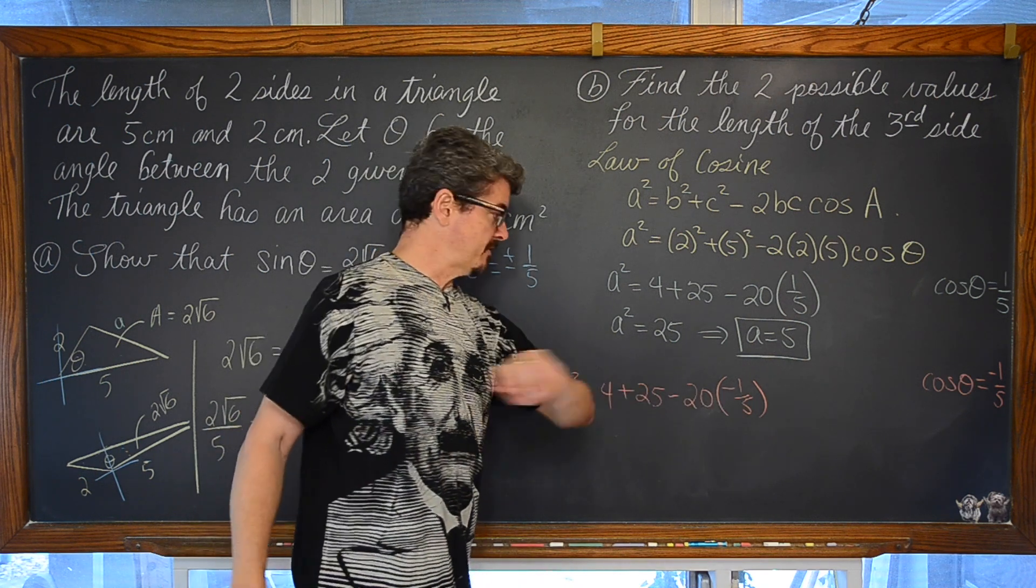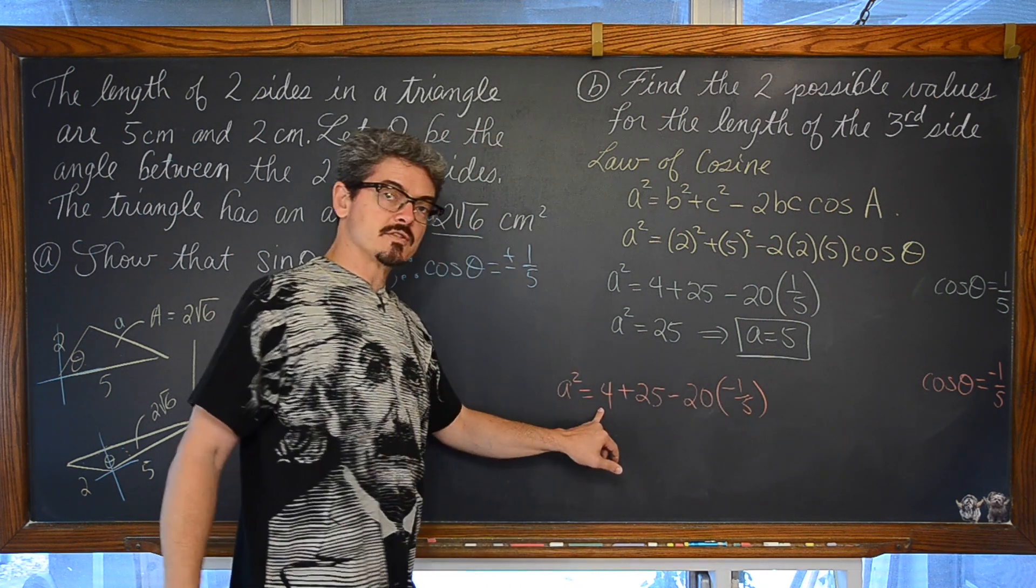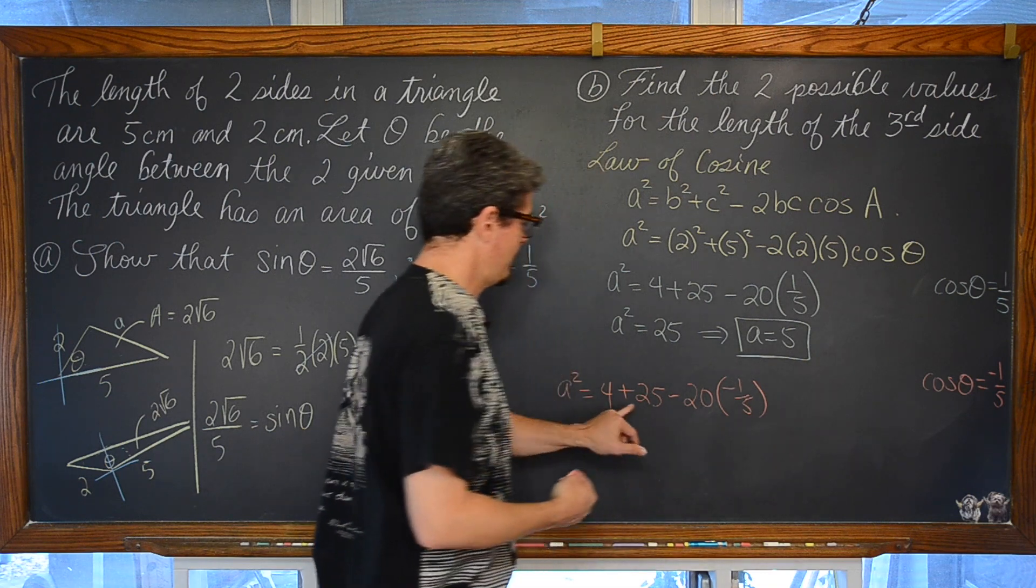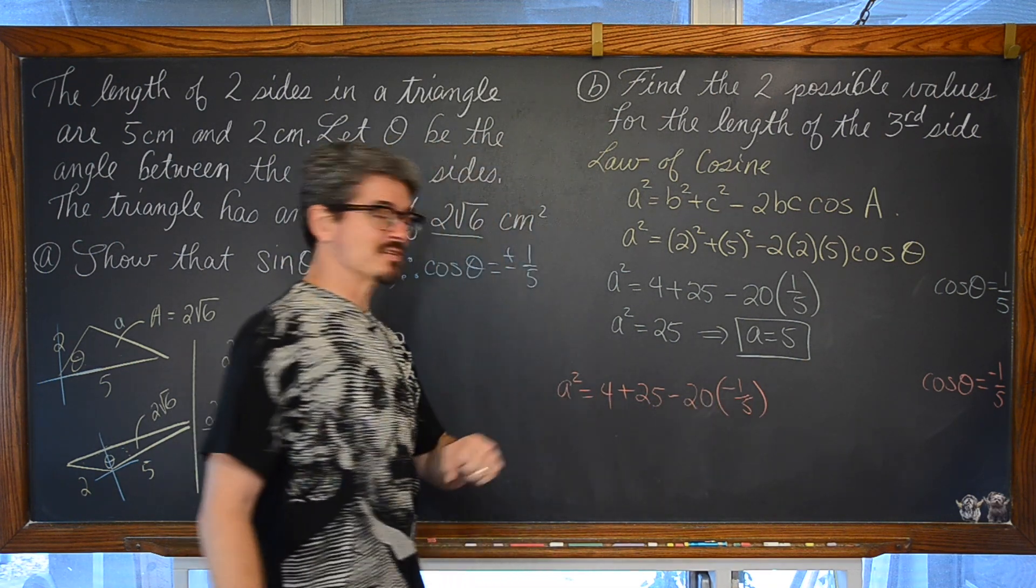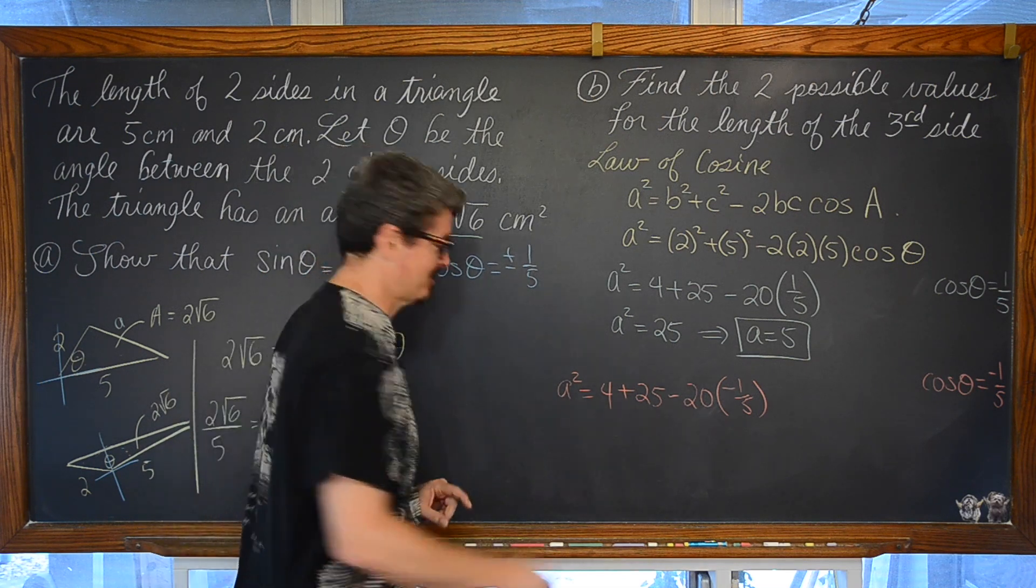Well, now we have negative 20 divided by negative 5 is positive 4. We have 4 plus 4, which is what? 28, and now, try that again. 4 plus 4, which is 8, and 8 plus 25 is 33.